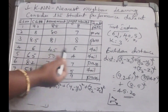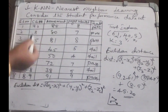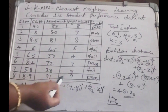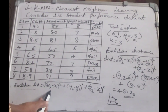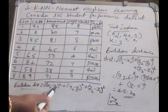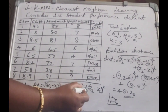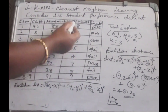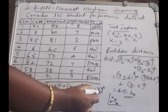From each neighboring point, from the test instance to the training instance, we have to compute the Euclidean distance. The formula we are using is: square root of (X2 minus X1) squared plus (Y2 minus Y1) squared plus (Z2 minus Z1) squared. We have added Z here because we have a third column — a third attribute — so for that attribute we take Z.